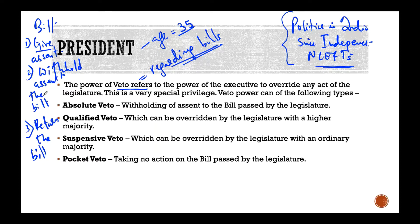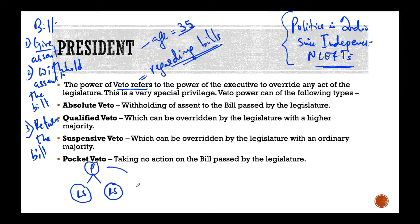What would happen in that case? Will the bill be accepted? Does the President have to give assent? The President has to give his assent. So to be clear: Lok Sabha and Rajya Sabha both passed the bill and gave it to the President. The President does not want to accept it, so he sends it back. But if it comes again, he has to accept. If the bill is passed again by Parliament, with or without amendments, and again presented to the President, the President must give his assent to the bill.